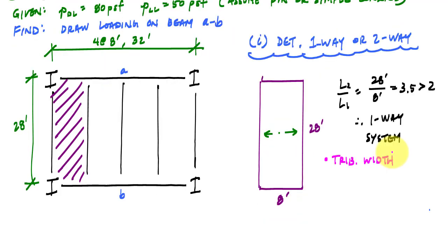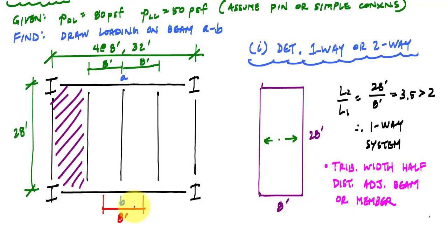That means load only travels in one direction, so the tributary area is a rectangle and the tributary width is half the distance to the adjacent member. So I'm interested in the loading of member AB, so I'm gonna go halfway to the next member for the tributary area, and then halfway to the other member which is over here. That is my tributary width and my tributary area for a one-way system. So I'm halfway to each beam. My tributary area for beam AB is this red shaded area here.